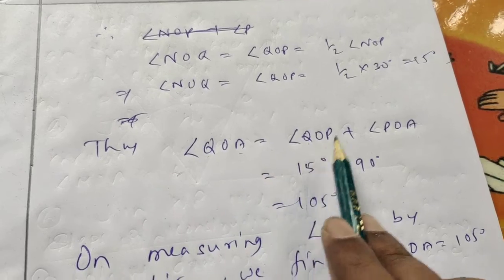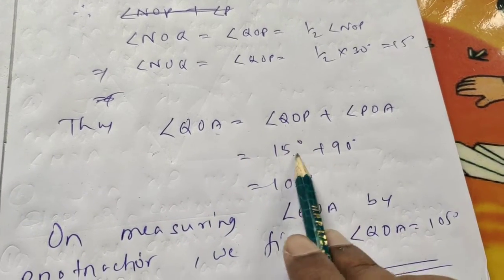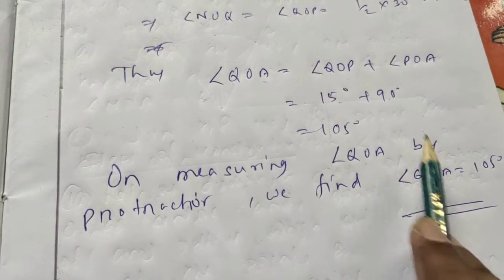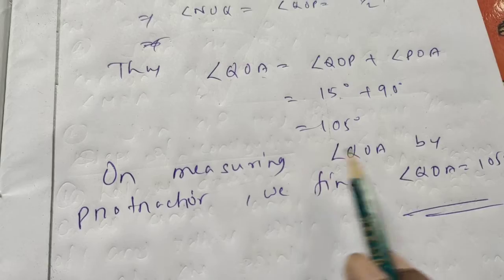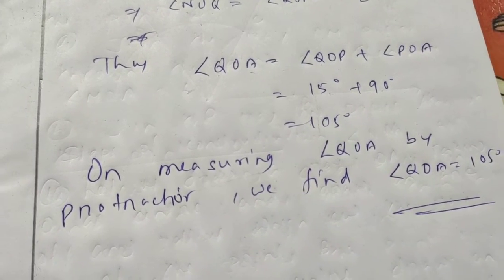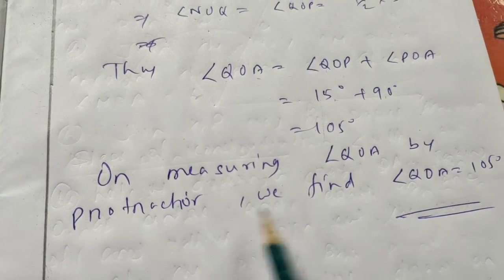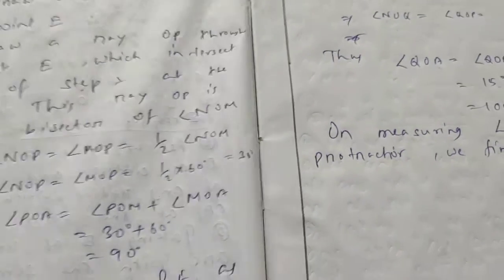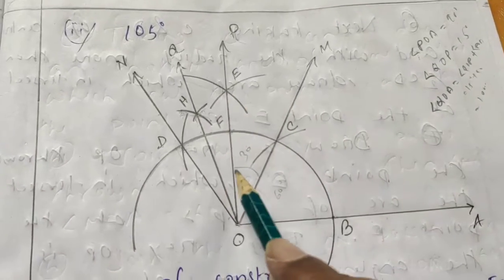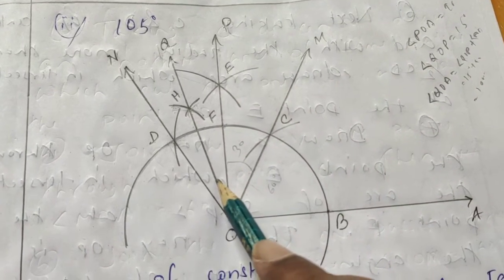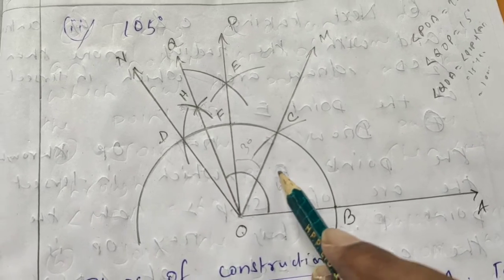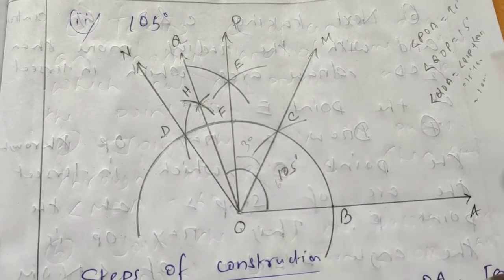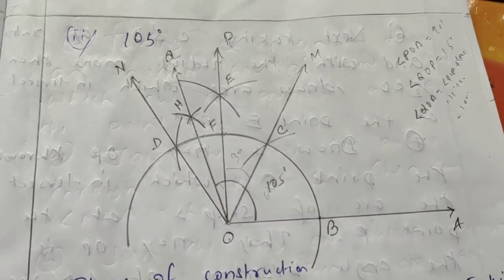For verification, use a protractor to measure angle QOA and you will get 105 degrees. So the final figure shows angle QOA equals 105 degrees.